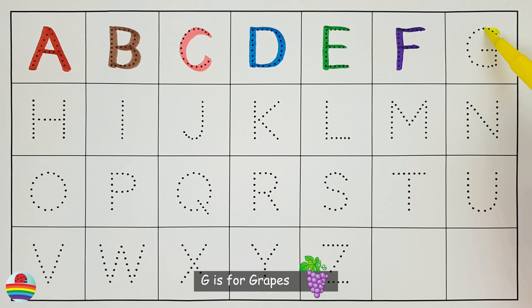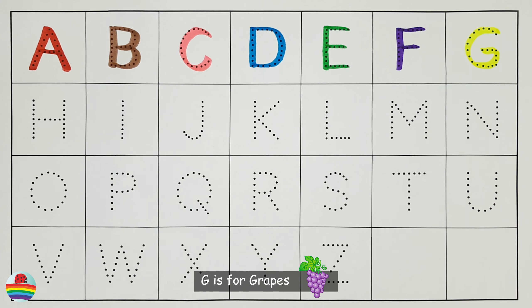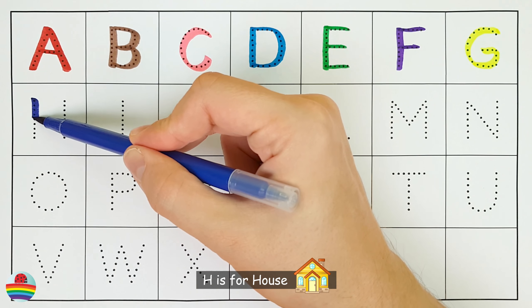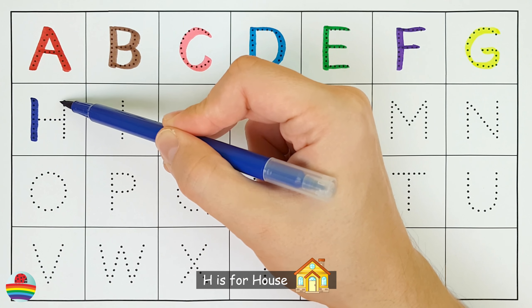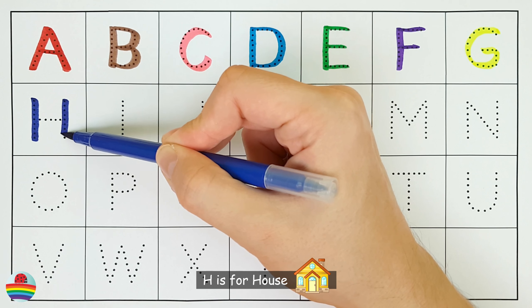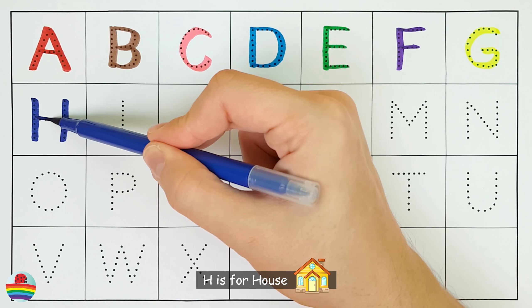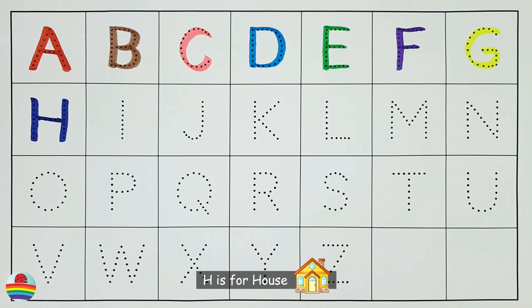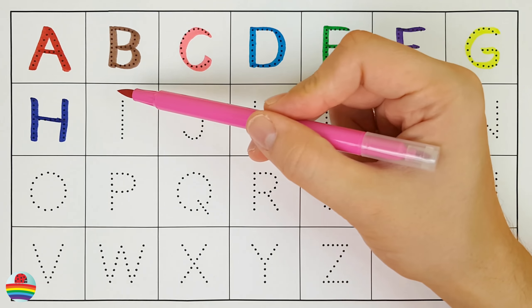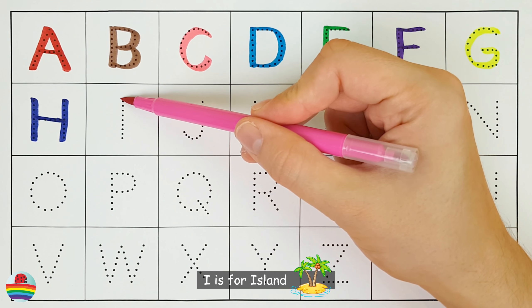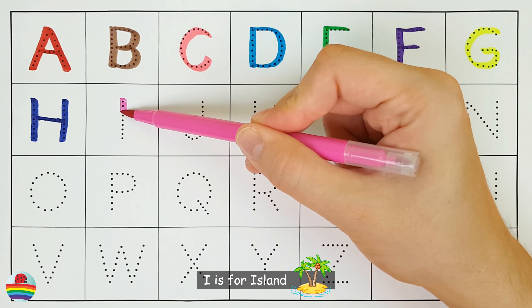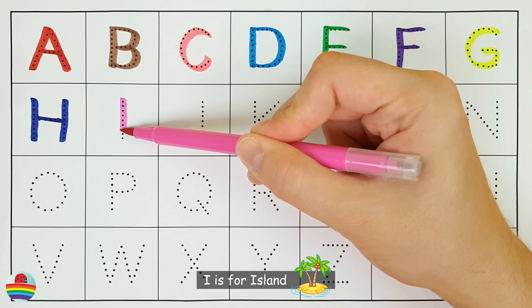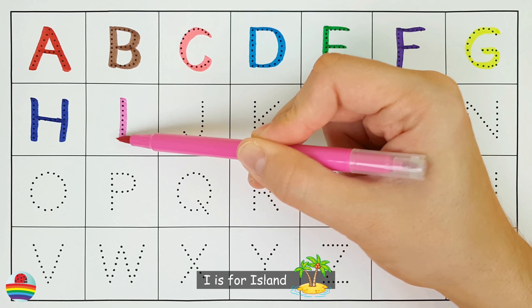G. G is for grapes. G. H. H is for house. H. I. I is for island. I.